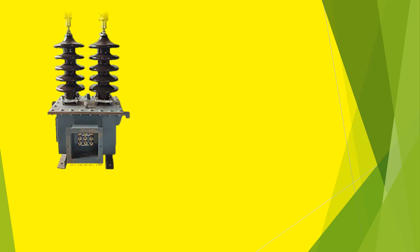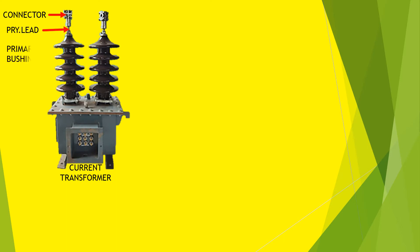This is an image of a 33kV current transformer. These are connectors for making connections with other apparatus. This is the primary lead. This is the primary bushing, which acts as an insulator.